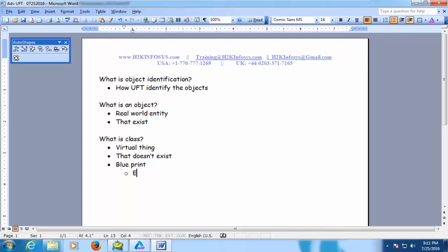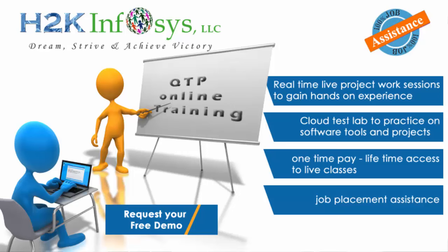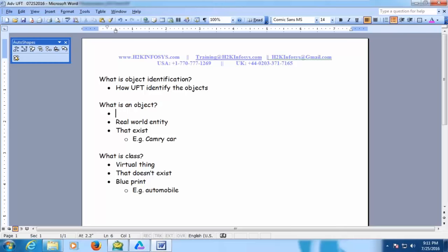Automobile — let's say that's the class. Whereas the object is going to inherit something — say, Camry car, or Hyundai car, or BMW car. Technically, the object is nothing but an instance of the class. That means this Camry car is an instance of the automobile class. Similarly, BMW is another instance of the automobile class, or Hyundai car is another instance of the automobile class.